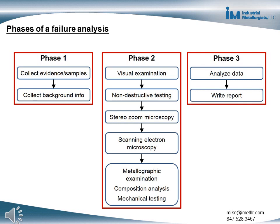There are three phases of a failure analysis. Phase one involves collecting samples and then collecting the background information regarding the use and how the item failed. Phase two involves the metallurgical examination to determine the failure mode and mechanism and the metallurgical features of the component or joint. Phase three is to analyze the data and, if necessary, write a report.